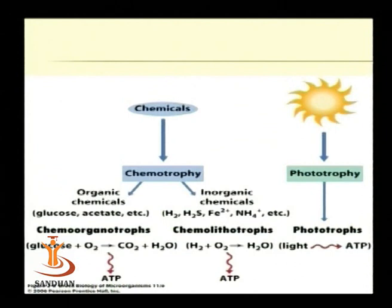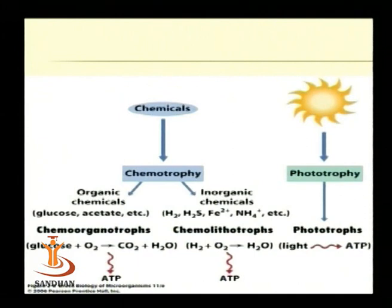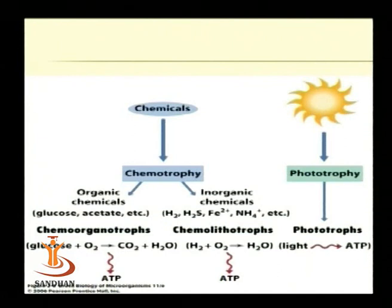In the case of phototrophs, the source of energy is radiant energy. These organisms have an inherent capacity to harvest radiant energy because they have the green pigment chlorophyll, and these are known as phototrophs.